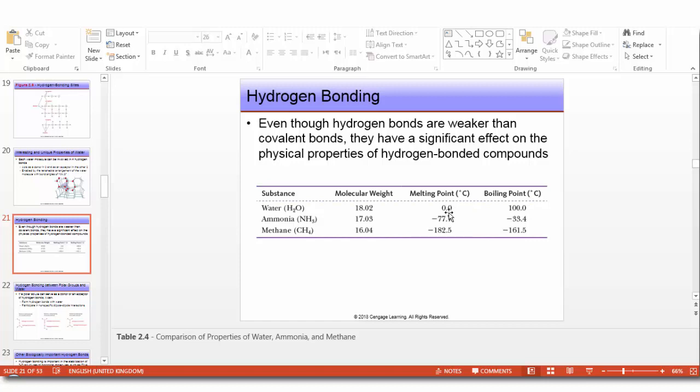Water has a melting point of 0 degrees, ammonia minus 78, and methane minus 182. At boiling point, water is 100 degrees, ammonia minus 33, and methane minus 161. All of this is because water is unique in its structure and physical properties as a solvent.